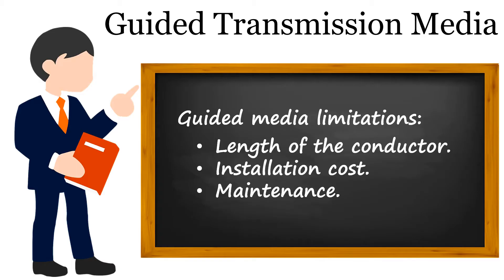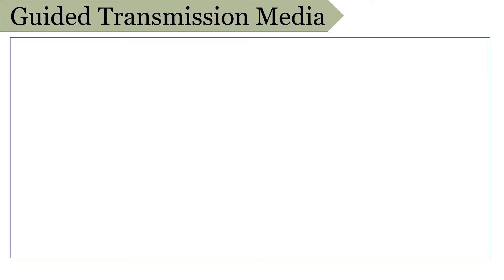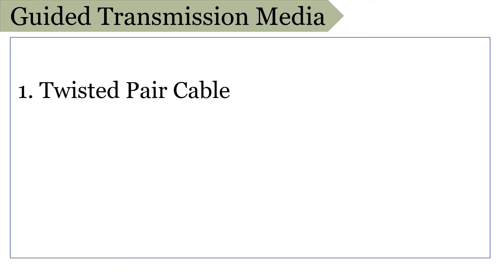Other limitations include installation cost, and of course maintenance is also an issue with guided media. The guided transmission media can be further categorized into three subcategories. The first one is twisted pair cable — two insulated copper wires twisted around each other.